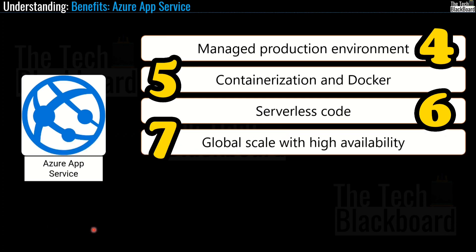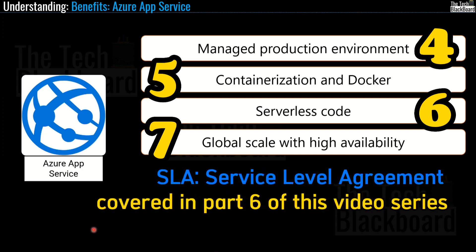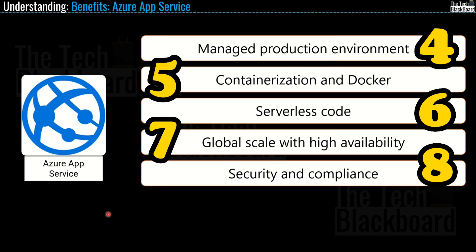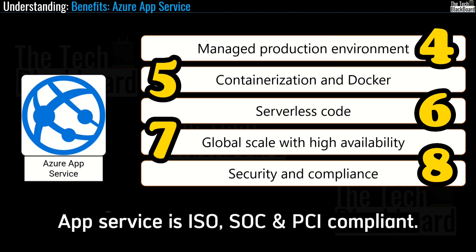Global scale with high availability is at number seven. You can scale up or scale out manually or automatically, host your apps anywhere in Microsoft's global data center infrastructure, and the App Service SLA promises high availability. SLA means service level agreement — I have already covered SLA in greater detail in part 6 of this video series. Moving ahead, security and compliance is at number eight — App Service is ISO, SOC and PCI compliant.